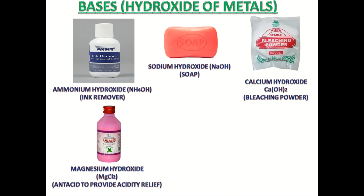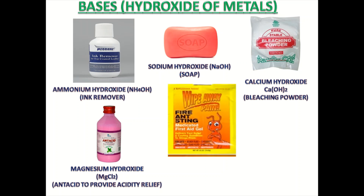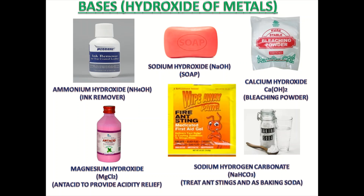Antacid has magnesium hydroxide, Mg(OH)2. This helps to provide acidity relief in the stomach. Ant sting and baking soda — both these products have sodium hydrogen carbonate, NaHCO3. It helps in treating ant sting, and baking soda helps in baking various products.